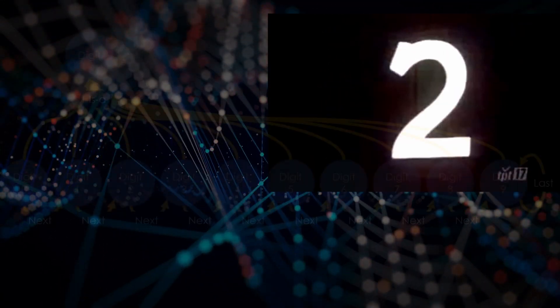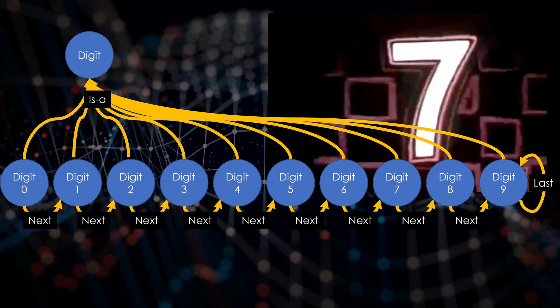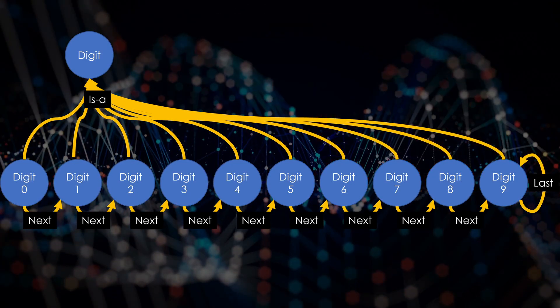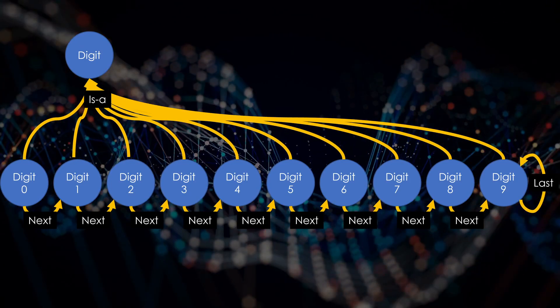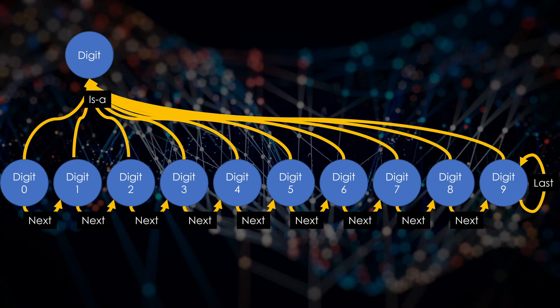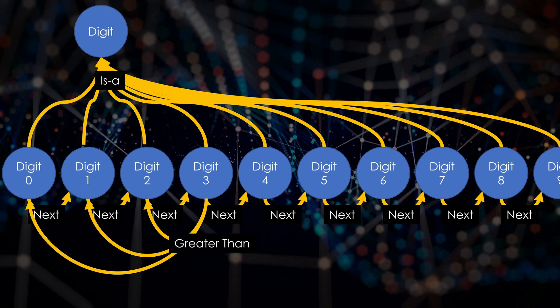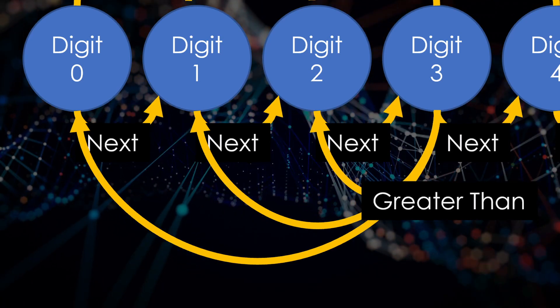When you learn to count to 10, your brain built the sequence of digits. It must have assigned a cluster of neurons to represent each of the digits and then added some sort of next relationship between them to indicate the sequence. Interestingly, now greater than can be defined as comes later in the sequence.